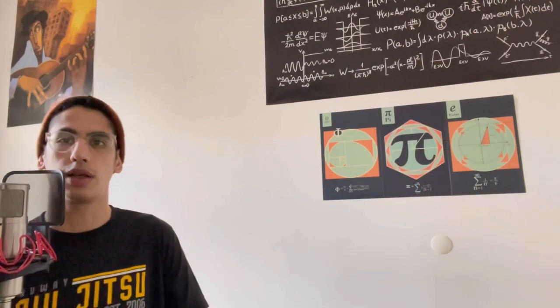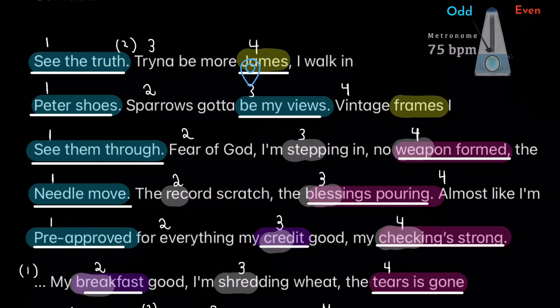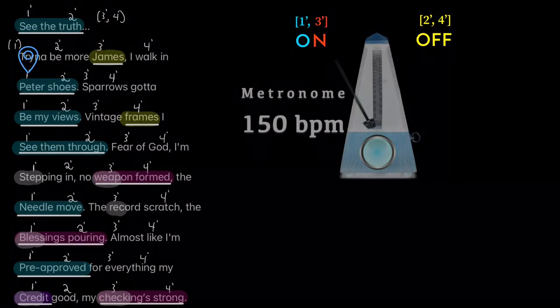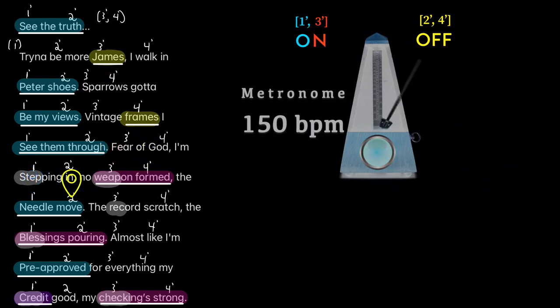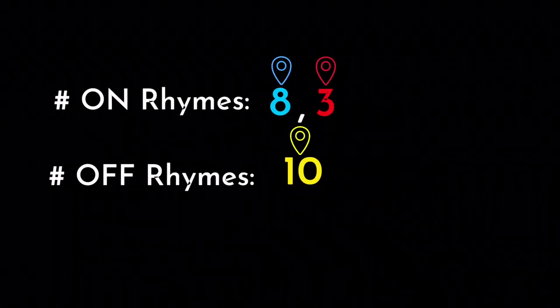But this isn't a video about Russ or his opinions. This is a great introduction into the notion of double time and rhyming. So now let's look at other artists that emphasize the off beat rhymes. For instance Mick Jenkins in his newer album there's a song Contacts. And in it is just a fascinating consistency when it comes to his use of the off beat rhymes. Real eyes, real lies, real lies, help me see the truth. Trying to be more James, I walk in Peter's shoes. Sparrow's gotta be my views. Vince's frames, I see him through. Fear God, I'm stepping in, no weapon form. The needle move, the record scratch, the blessings pawn. Almost like I'm pre-approved for everything. My credit good, my check is strong. Now that's a remarkable consistency that's coming in terms of the on rhymes and the off rhymes.